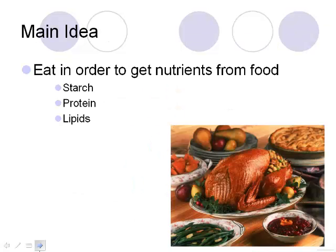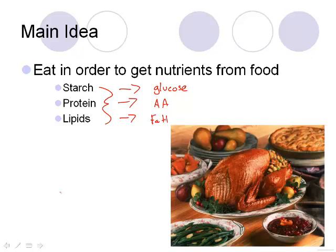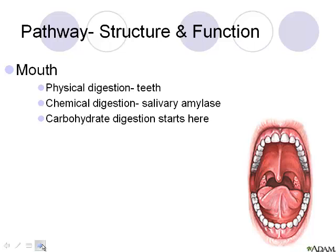Our main idea — the whole reason why we digest food — is so we can get nutrients from our food, such as starch, proteins, and lipids, which we'll end up breaking down into their monomers: glucose or other carbohydrate monomers, amino acids, and then fatty acids and glycerol.